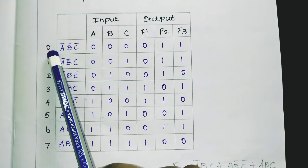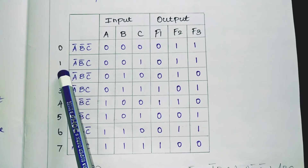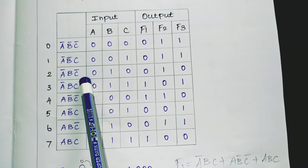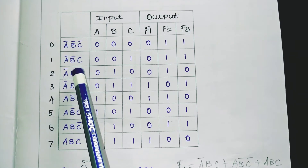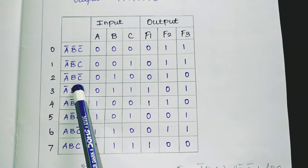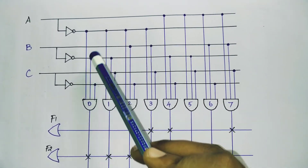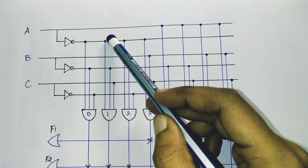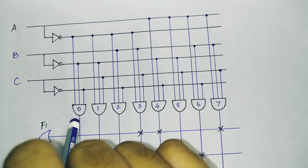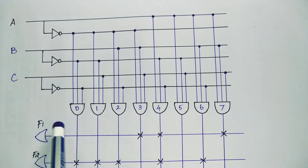Connect the input lines to each AND gate based on the table. For gate 0: A̅, B̅, C̅. For gate 1: A̅, B̅, C. For gate 2: A̅, B, C̅. Connect all remaining gates similarly with their respective input lines up to gate 7.